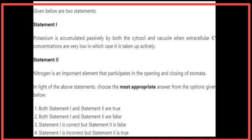Given below are two statements. Statement 1: Potassium is accumulated passively by both the cytosol and vacuole when extracellular potassium concentrations are very low, in which case it is taken up actively — Statement 1 is correct. Statement 2: Nitrogen is an important element that participates in the opening and closing of stomata — Statement 2 is false. The most appropriate answer is Statement 1 is correct and Statement 2 is false.